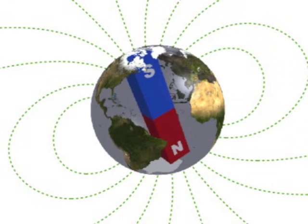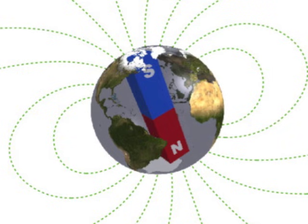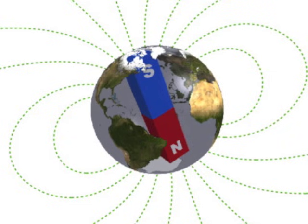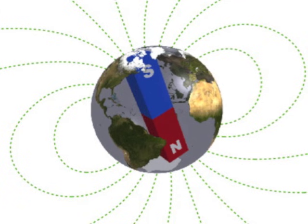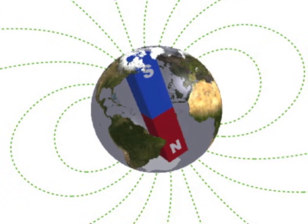A diagram like this can also be used to see how well students understand that north and south poles attract and vice versa. Ask your students, why does the imaginary bar magnet inside the Earth appear to be upside down?